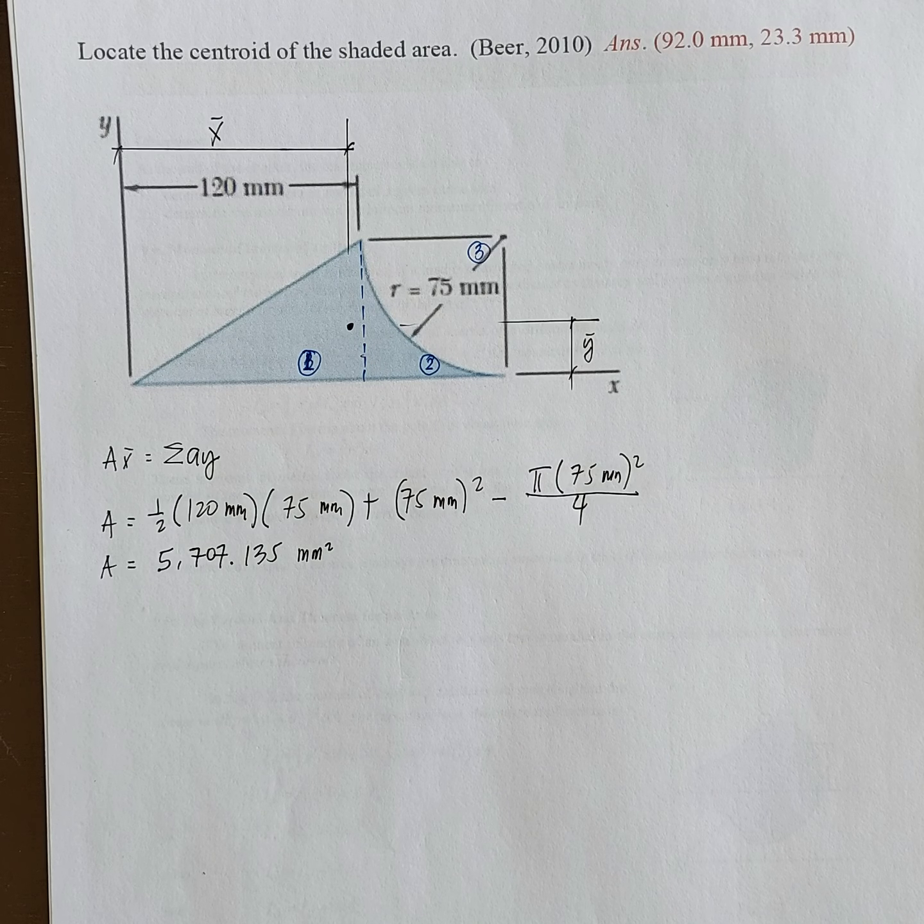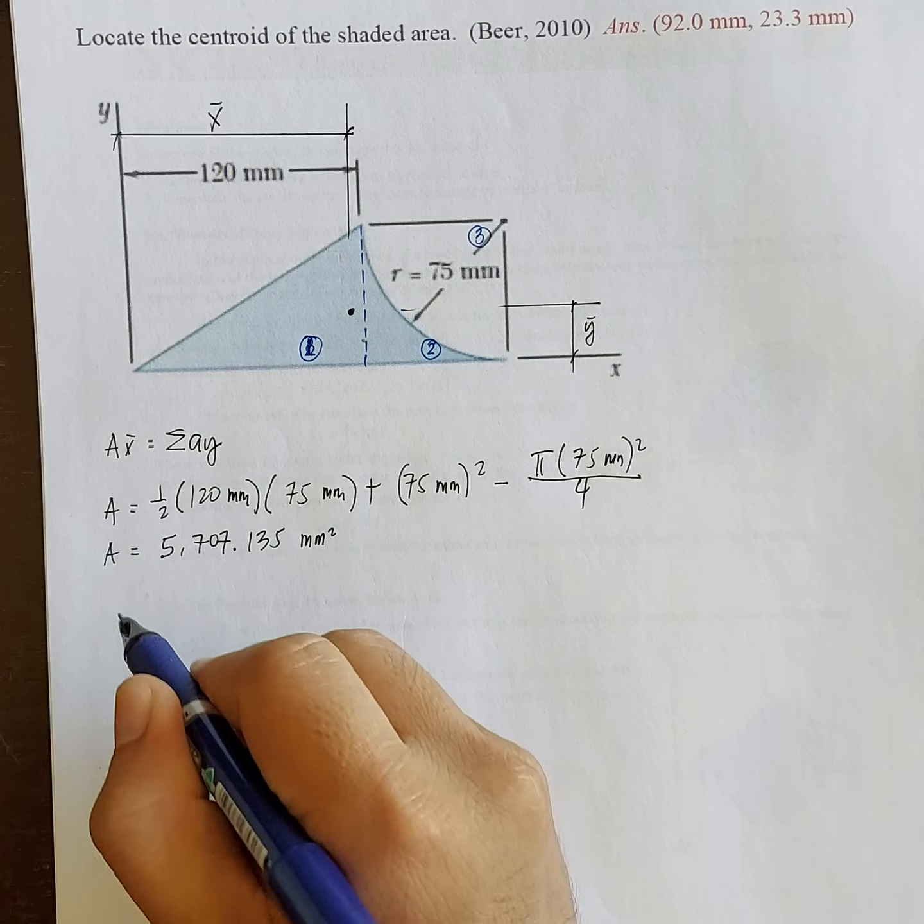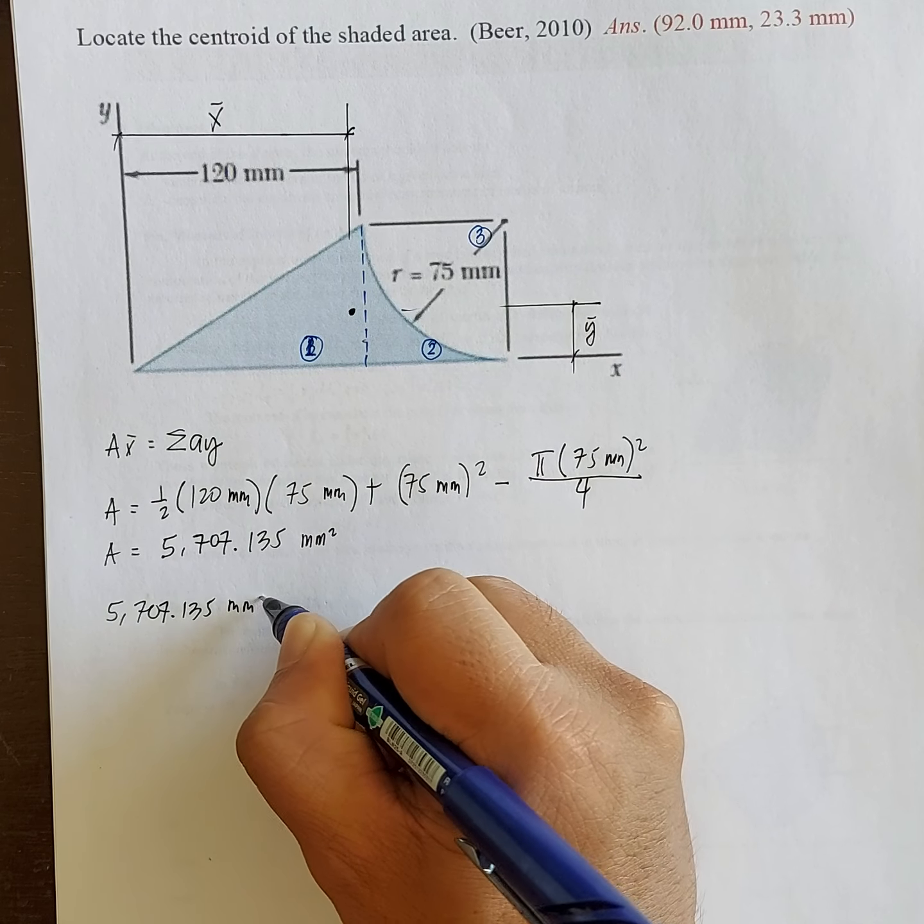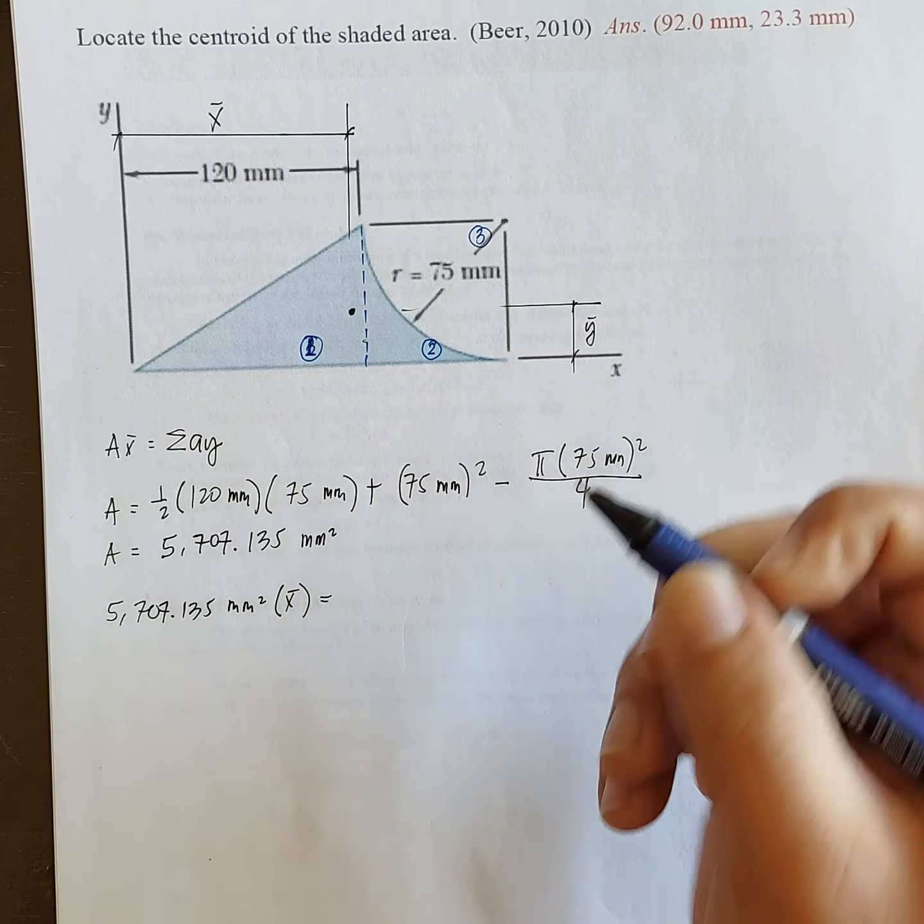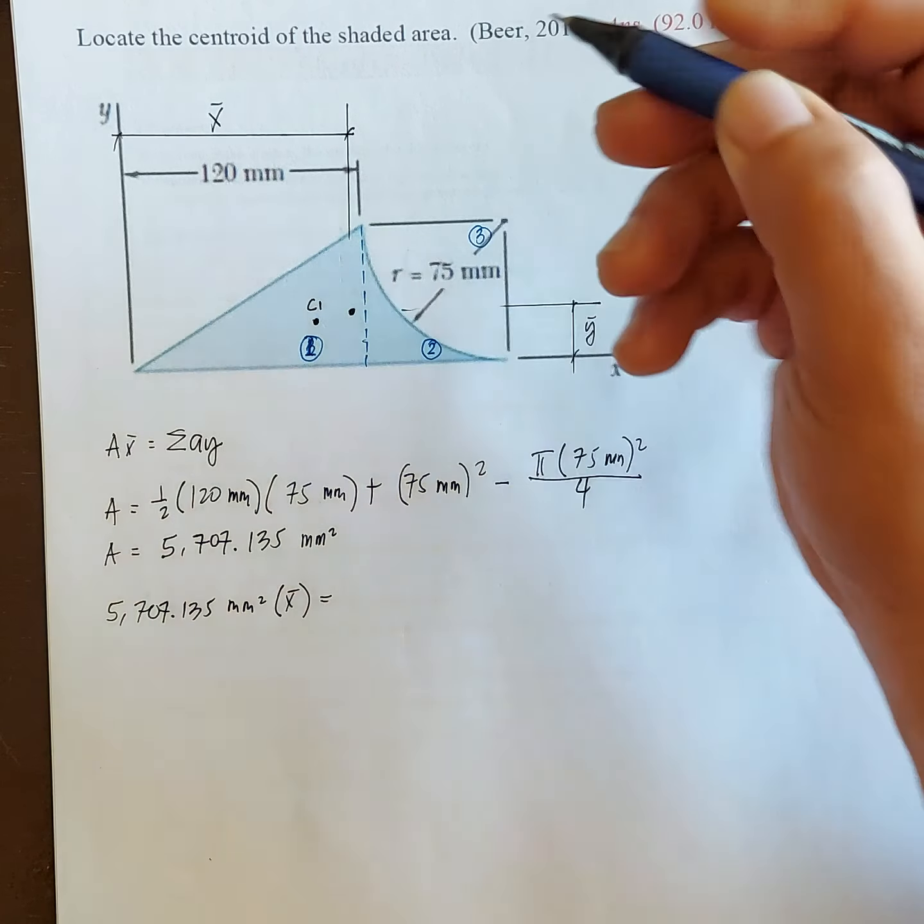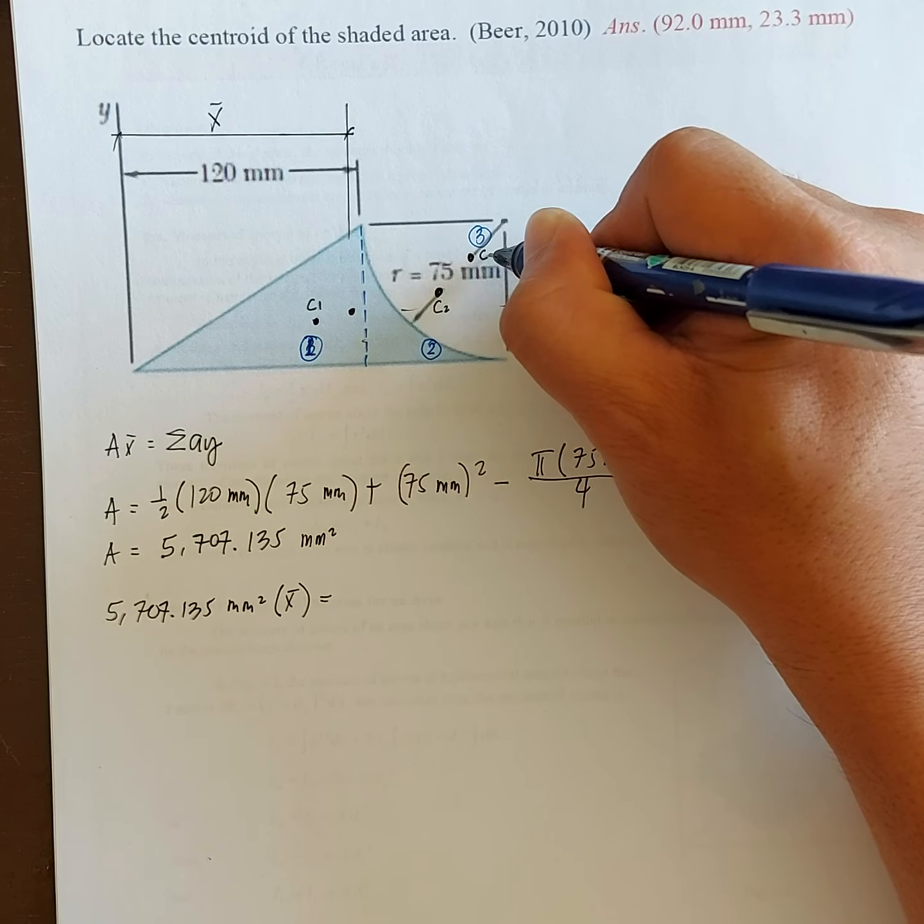So first, we need to solve for x-bar. So total area, that's 5,707.135 square millimeters times x-bar. It's equal to, let's start with area 1. So area 1. This is the centroid of area 1. Centroid of area 2. Centroid of area 3.